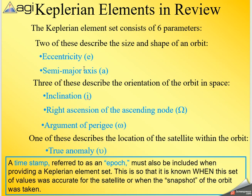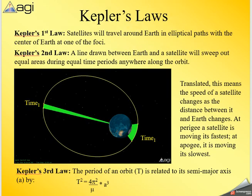Kepler elements: eccentricity and semi-major axis define the shape; inclination, RAAN, and argument of perigee define the orientation; and true anomaly defines the location. The timestamp is the epoch — used when discussing all of them together. This tells you exactly where a satellite is at a given snapshot in time.